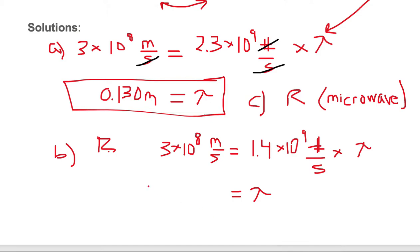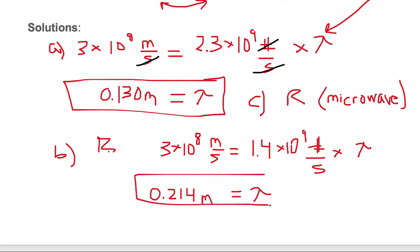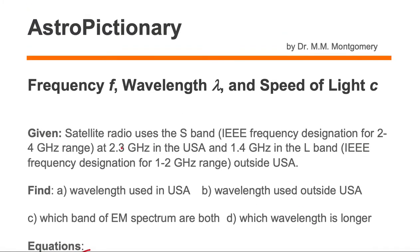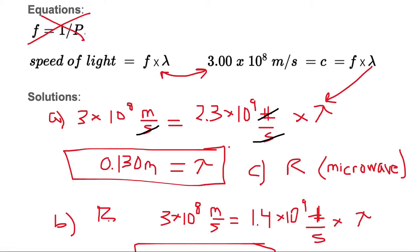So we're left with 0.214 meters, which is 21.4 centimeters. We are still in the radio band. Now comparing the two: 21.4 centimeters versus 13 centimeters — 0.214 meters is the longer wavelength. That's our answer for part D. In general, for similar problems you're either given frequency or wavelength and solving for the other, since the speed of light is always a constant.